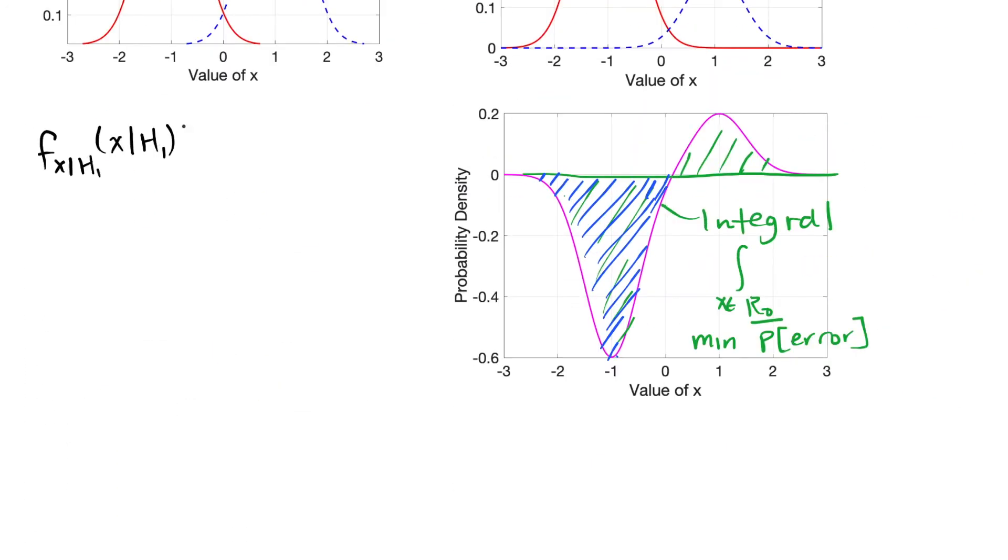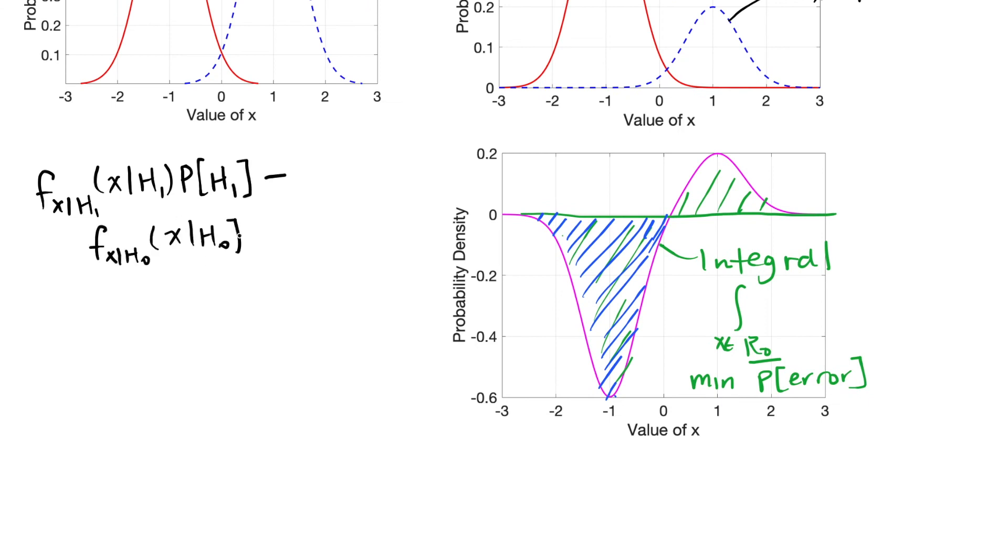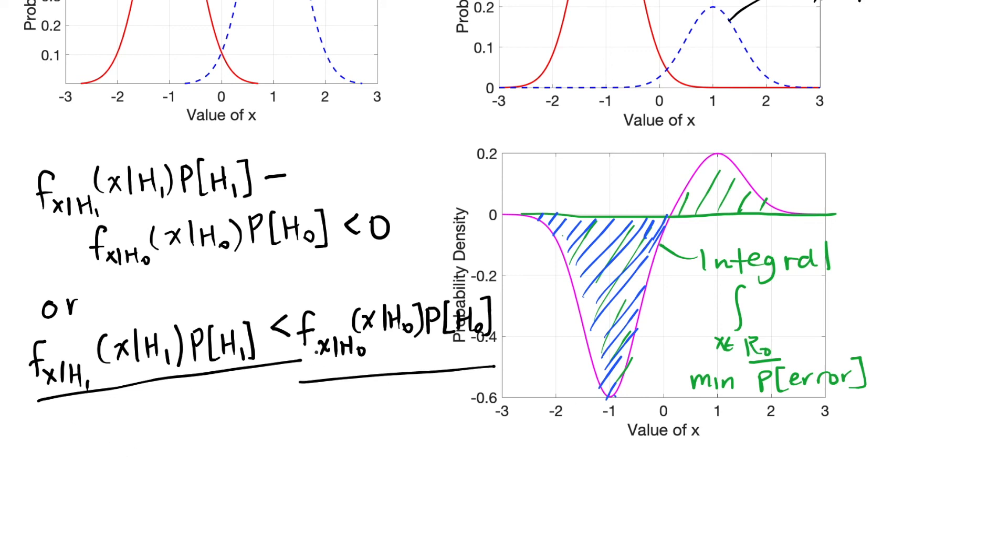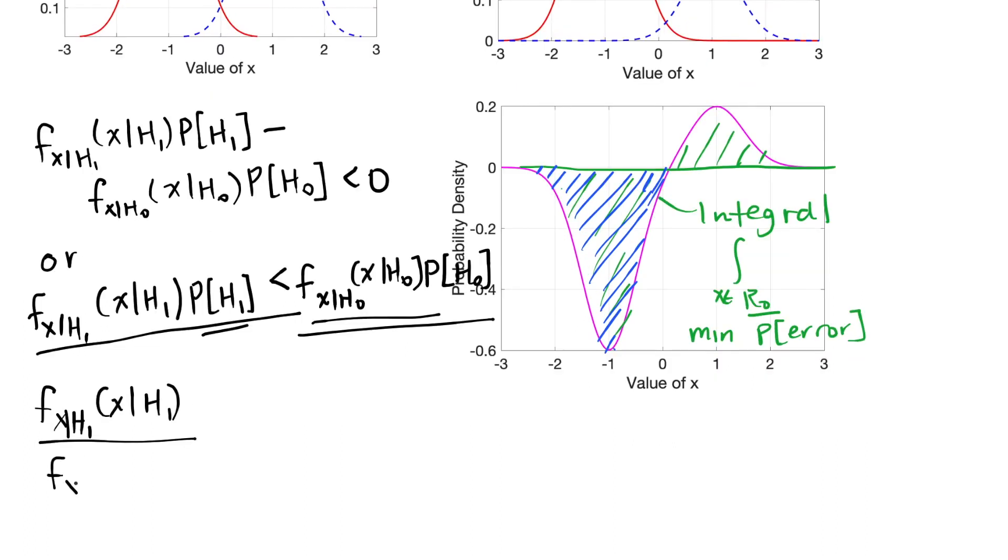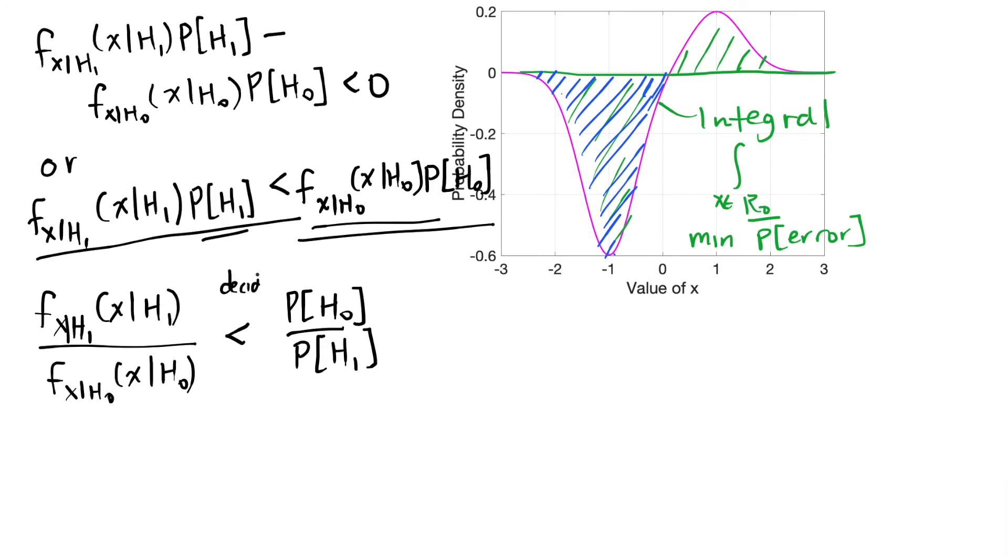That is the joint probability density function here. When I plug in X into this PDF multiplied by the probability of H1 is less than this other joint probability density function. And I can rewrite this by dividing both sides by this probability density function and dividing both sides by this probability of H1. That is if this is true, then I'm going to decide H0. And if the opposite is true, I'm going to decide H1. So this becomes our decision, our way to minimize the probability of error.